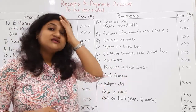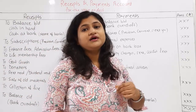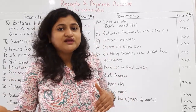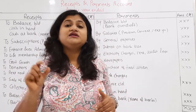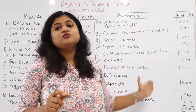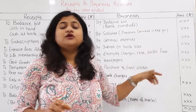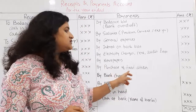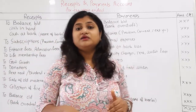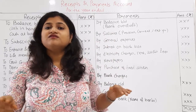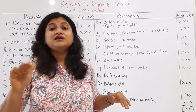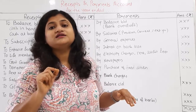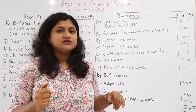Next: purchase of fixed assets. Purchase of fixed assets is a capital expenditure, not a receipt. Fixed assets such as land and building, plant and machinery, and furniture are purchased. We don't purchase them on a regular basis — they are non-recurring in nature — and their benefit is received over the long term. Therefore, both revenue and capital expenditures are entered on the payment side.